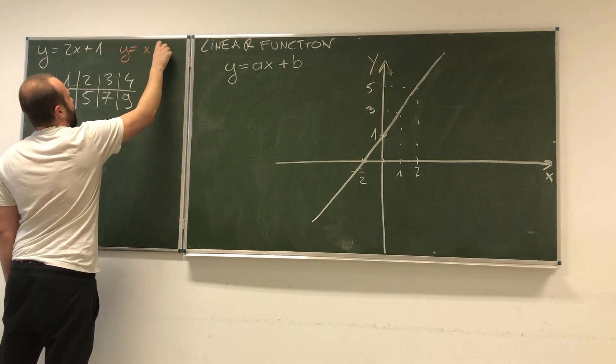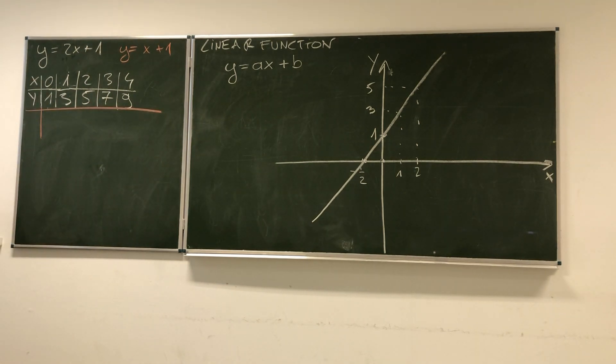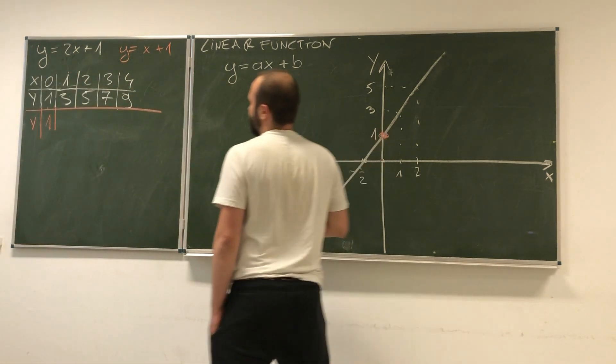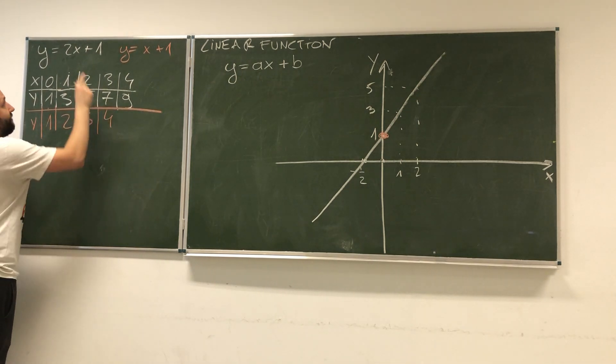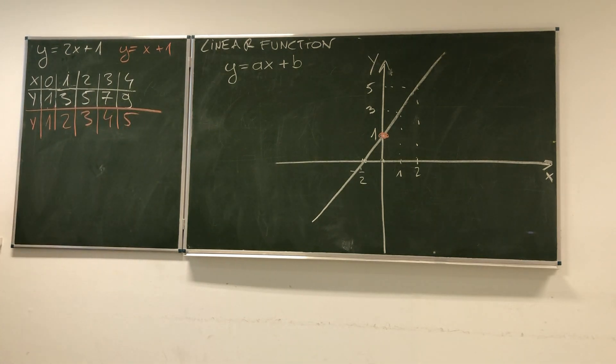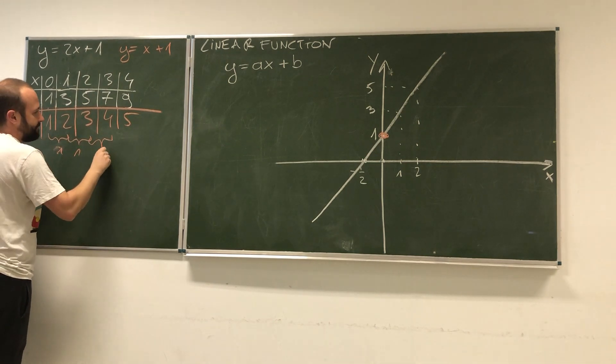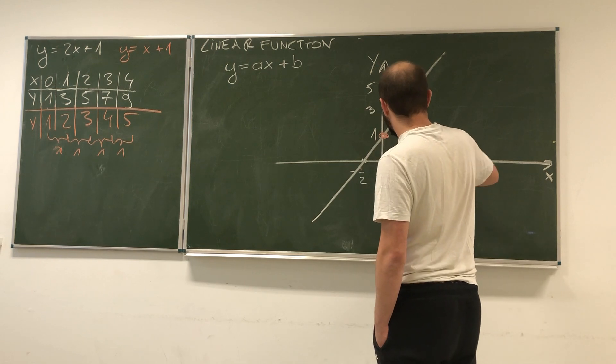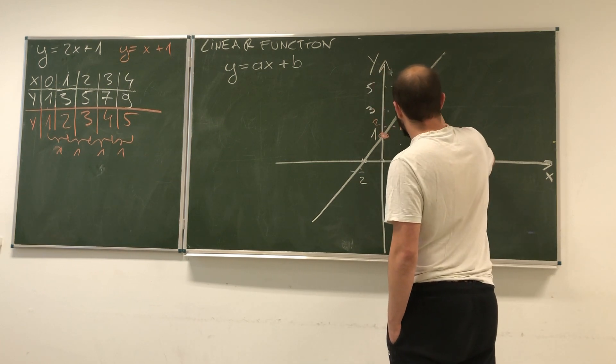Now we have y equals x plus 1. In this case, when x is 0, y is 1, so we have a common intercept for both of these functions. Then when x is 1, y is 2, then 3, then 4, then 5. We see that values of the function are always changing by 1. If x is 1, y is 2, and 3.